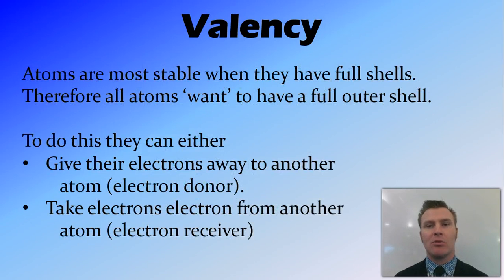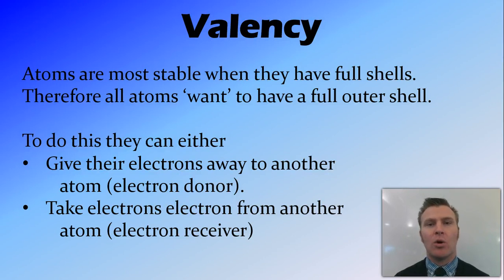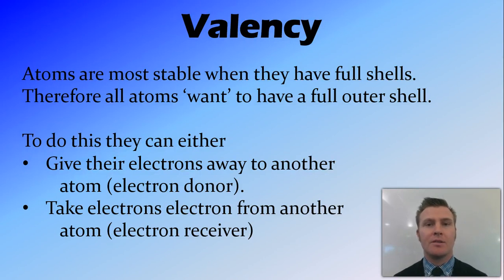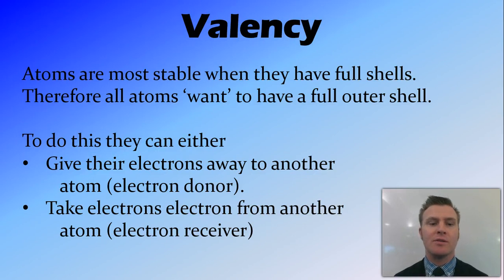Atoms are the most stable when they have full shells. Therefore, we say that all atoms want to have a full outer shell. They don't really want anything, but it's easier for us to think about atoms wanting to have a full outer shell and be happy if they've got one. To do this, there are two ways they can get a full outer shell: they can either give their valence electrons away to another atom — we call those electron donors — or they can take electrons from another atom — we call these electron receivers.